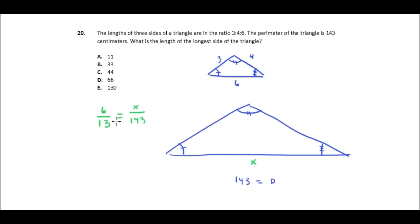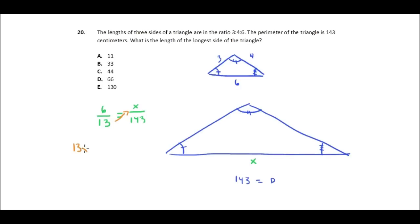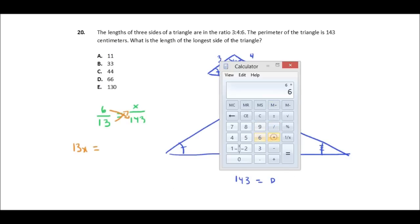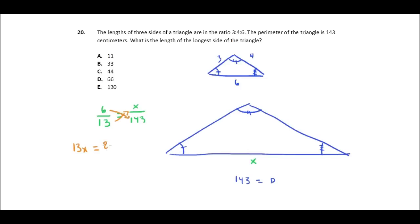So I've got 13 times x, well that's 13x, and I know that that equals 6 times 143. So let me do that on the calculator. 6 times 143, and that, whoops, I didn't do that right. 6 times 143, and that equals 858, so 858.